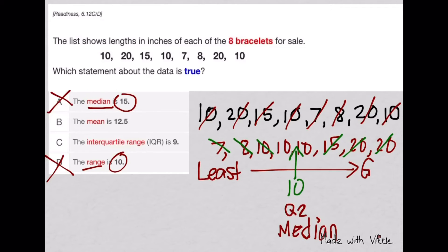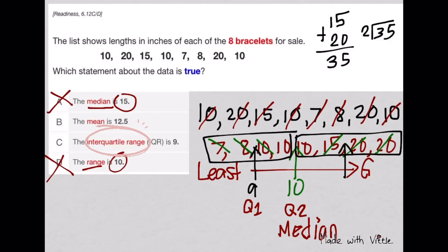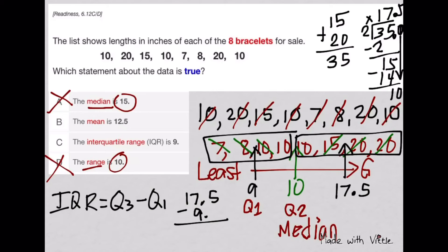Next easy to find is the IQR, interquartile range. Since there's two numbers here on the right side, 15 and 20, add them and divide by 2 to get the middle number Q3. Now subtract Q3 minus Q1, but make sure you line up the decimal points correctly. The IQR is 8.5, and looking at letter C, it's wrong. Therefore, the answer is B.